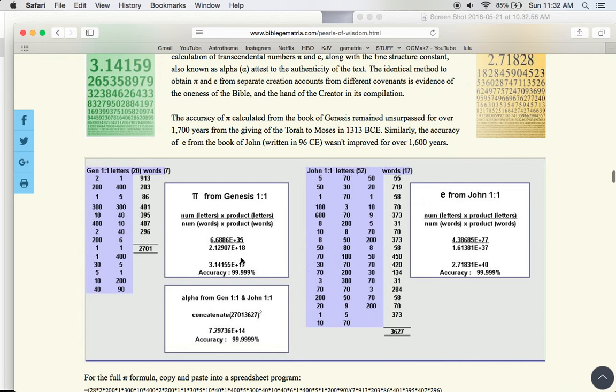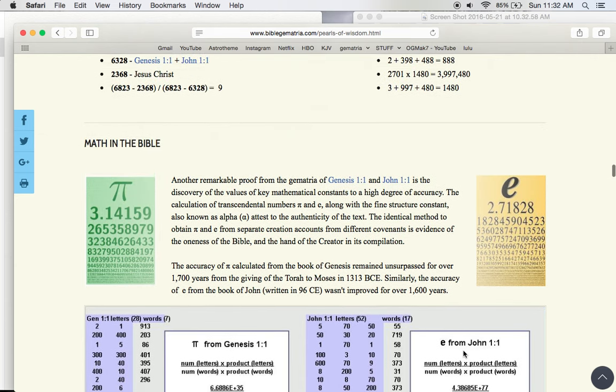And here's another way Genesis hides pi, and John 1:1 hides E, which is 2.718 or alpha. And it's crazy.